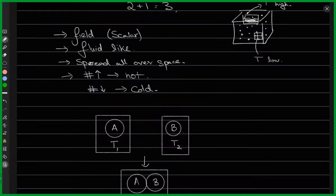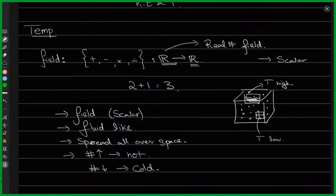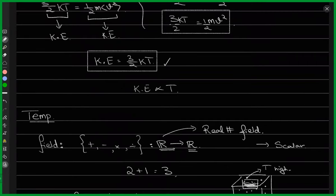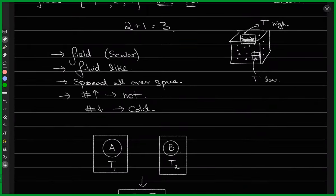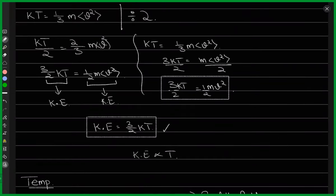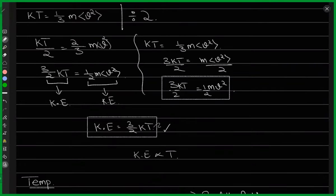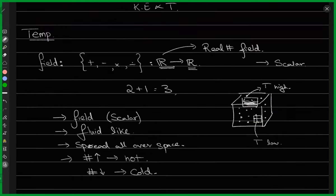Last time we were talking about temperature. We derived the equation for kinetic energy in terms of temperature, where we saw that temperature is really the measure of the speed of the vibrations of molecules. So the more the temperature, the faster the molecules are jiggling around in any given substance. Then we talked about what that temperature really is.